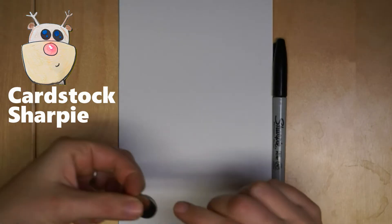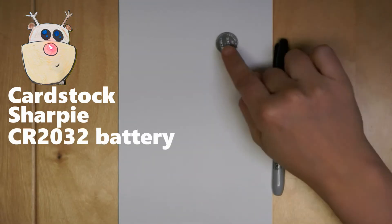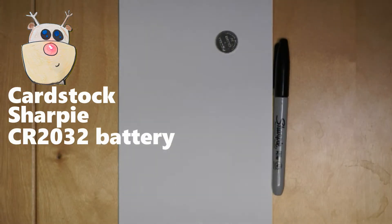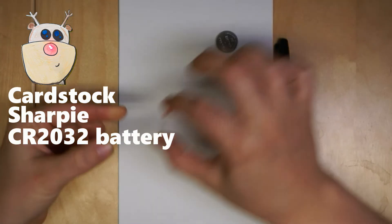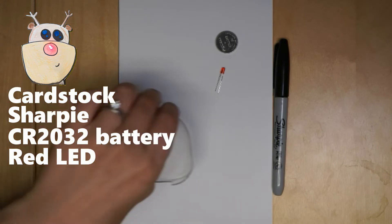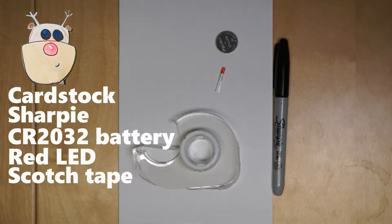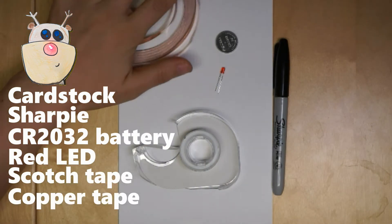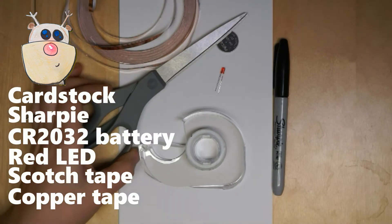If you're going to make it light up, you need a few extra things. You need a battery—this is a CR2032 battery. I chose a little red LED which you could use any color you want. You're going to want some scotch tape and some copper tape that will help us make the wires, and then we'll need some scissors.